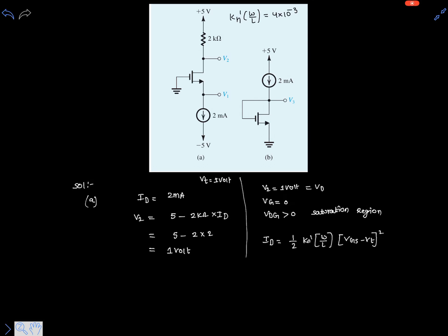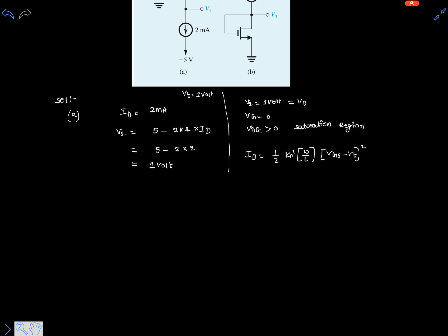Now let's simplify this. 2 milliamperes equals half times 4 times 10 to the power of minus 3, multiplied by (vgs minus vt) squared, which is clearly vgs minus vt equals 1.